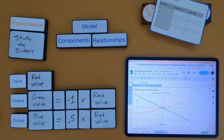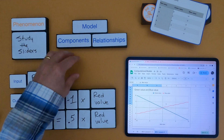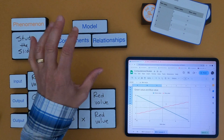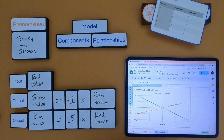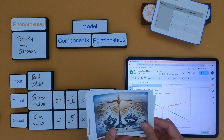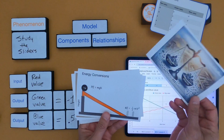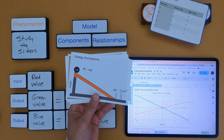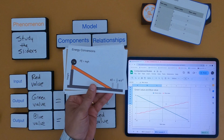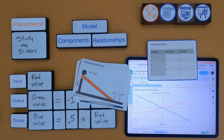That's the full process: going from a phenomenon to the components, to a computational model, and then to a simulation. You could do this for something like supply and demand, or energy conversions in physics. It makes all your calculations much quicker — that's computational thinking, Level 4, and I hope that's helpful.